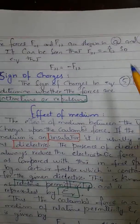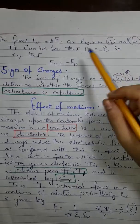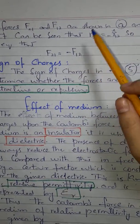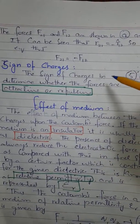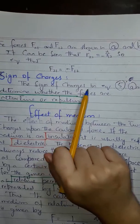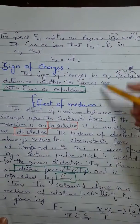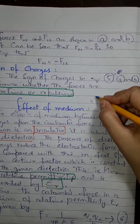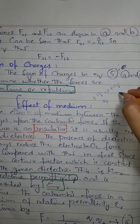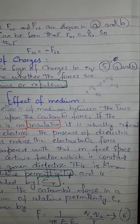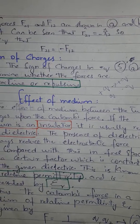To represent the direction of these forces, we introduce unit vectors. If r̂₂₁ is the unit vector directed from q1 to q2 and r̂₁₂ is the unit vector directed from q2 to q1, then equation three becomes: F₂₁ = (1/4πε₀) · (q1·q2/r²) · r̂₂₁ and F₁₂ = (1/4πε₀) · (q1·q2/r²) · r̂₁₂. It can be seen that r̂₂₁ = −r̂₁₂, so F₂₁ = −F₁₂.